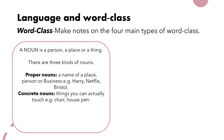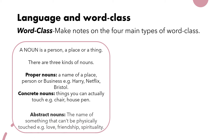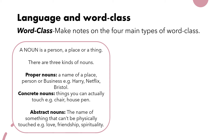Next we have concrete nouns. As the name suggests, something concrete is physically there — things you can actually touch, like a chair, a house, or a pen. The opposite of this is what we call abstract nouns. These are names of something you can't physically touch, such as love and friendship — things that aren't visible in a physical sense, but that we still know are real even though we can't see them.